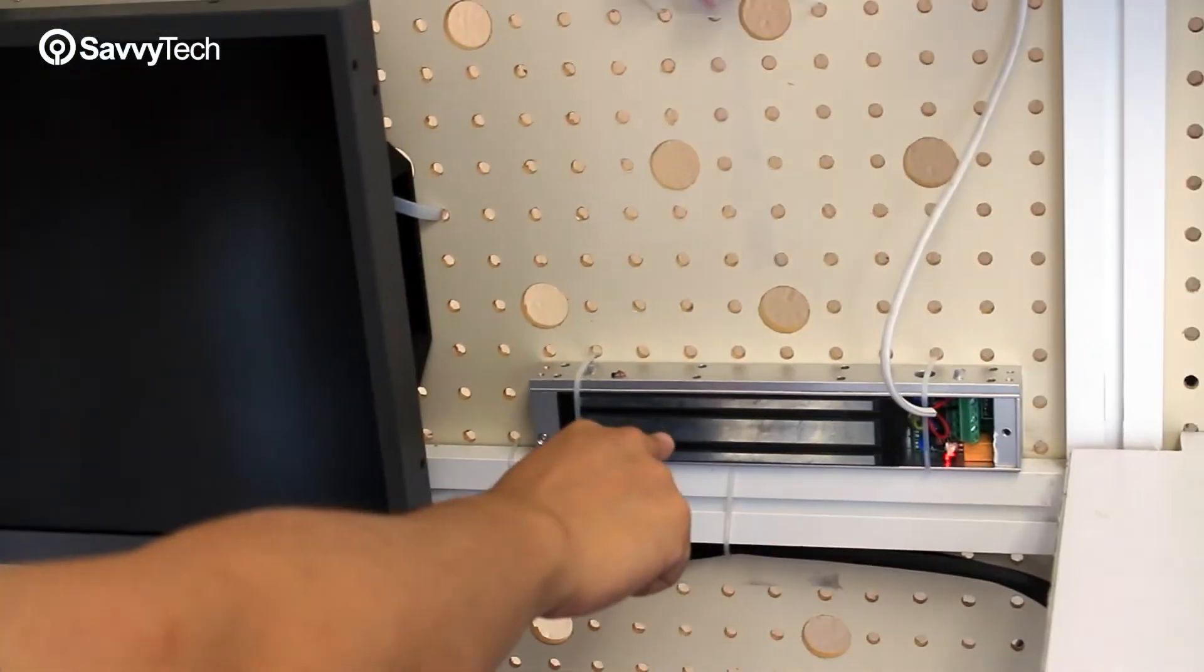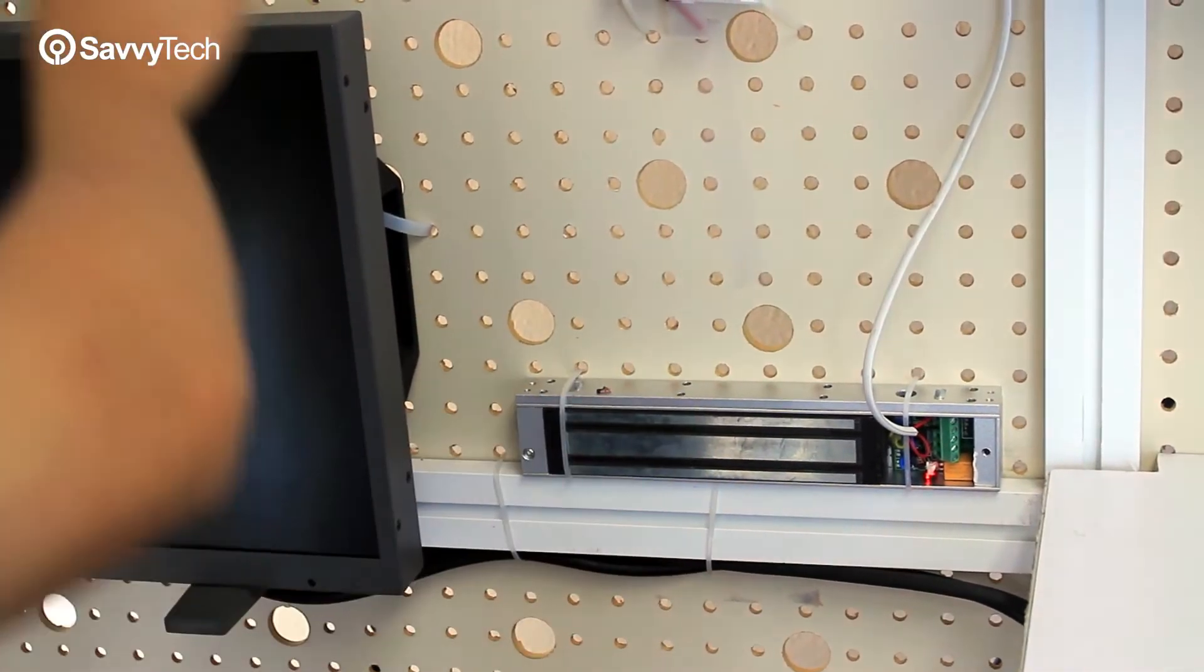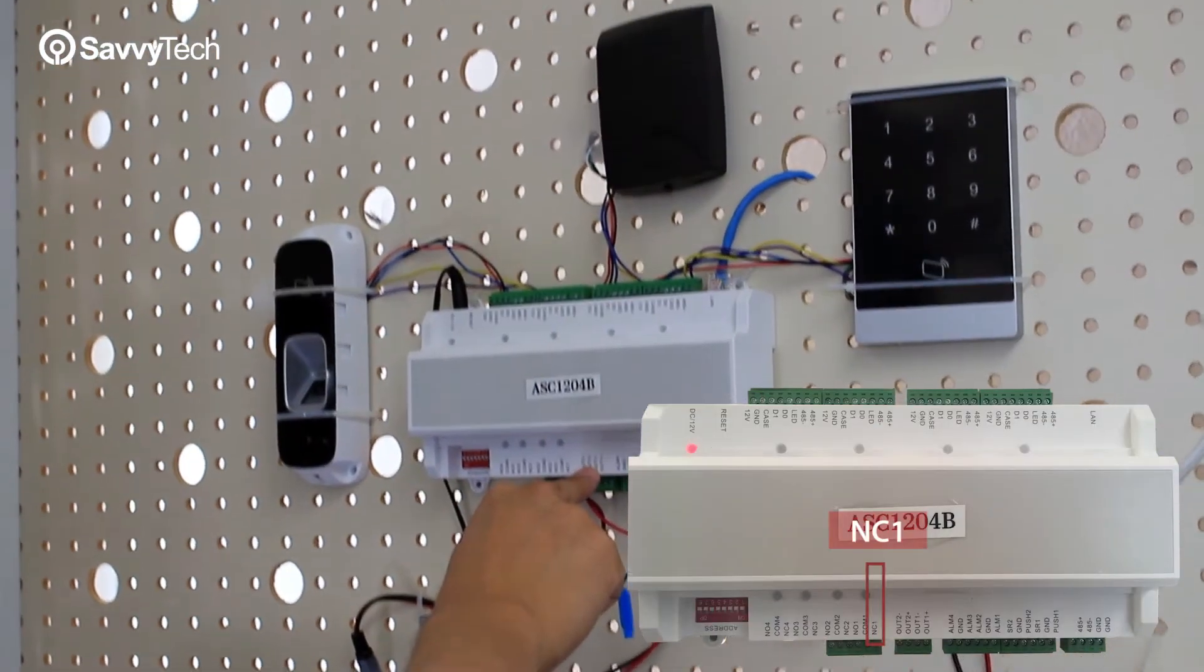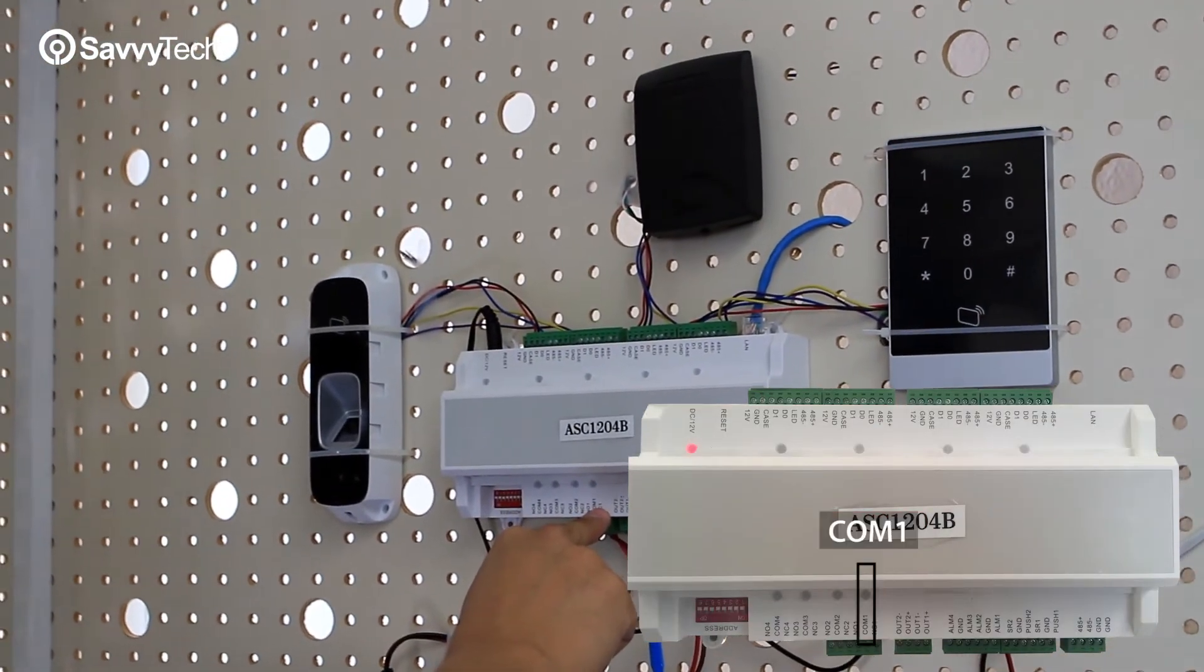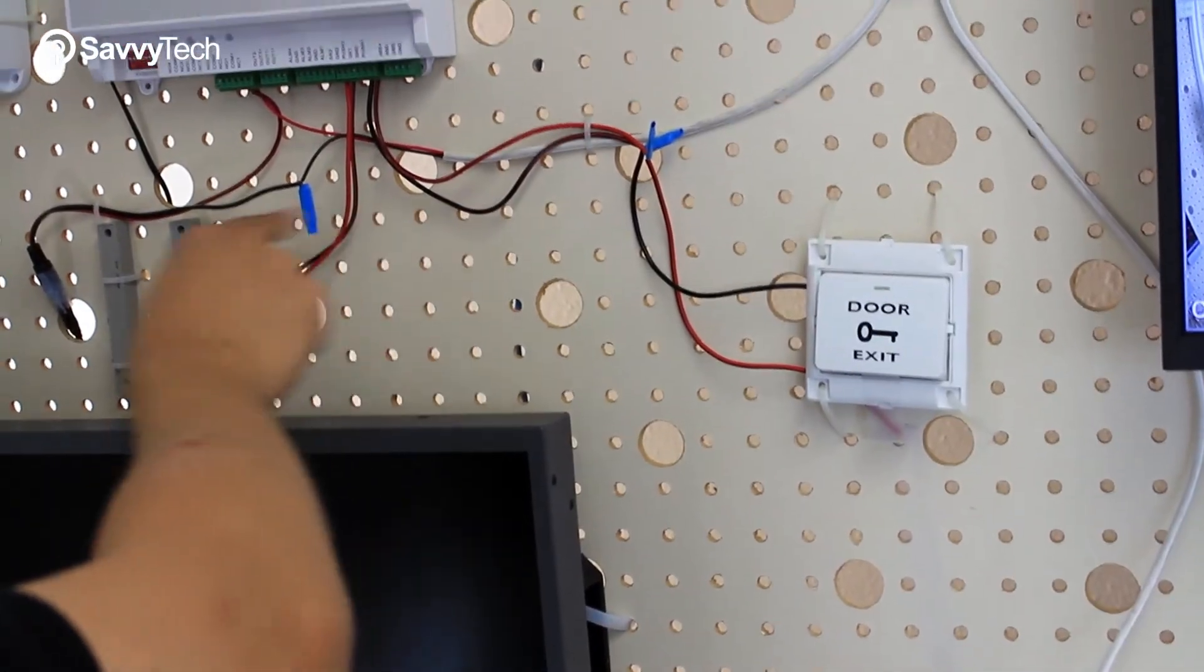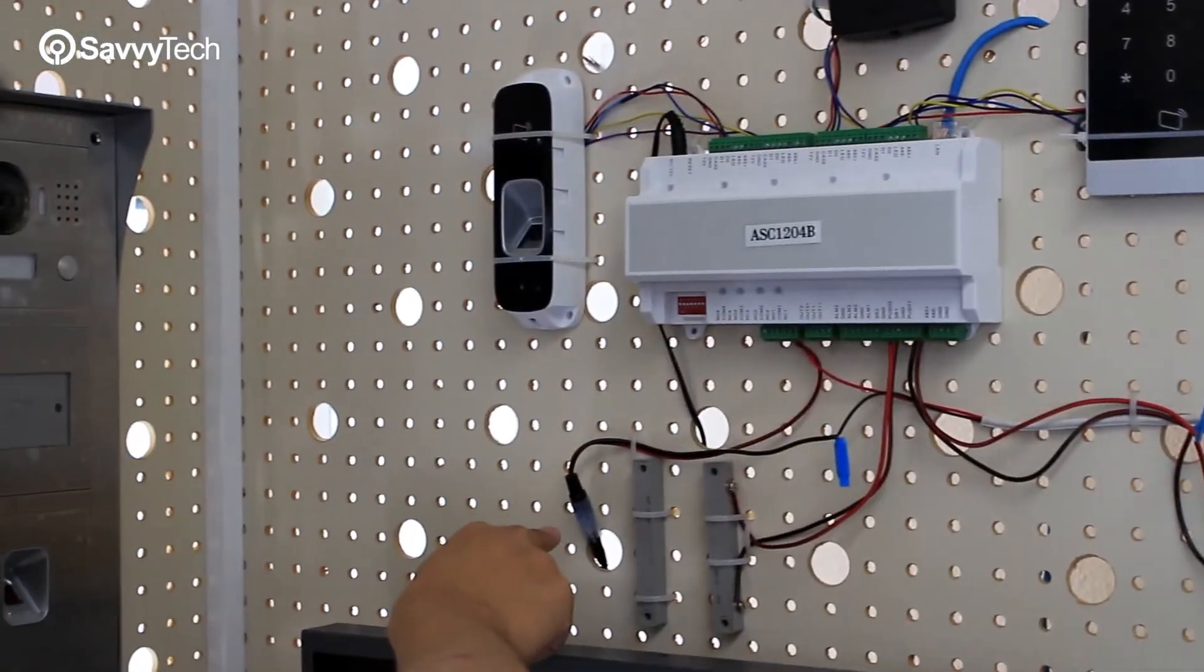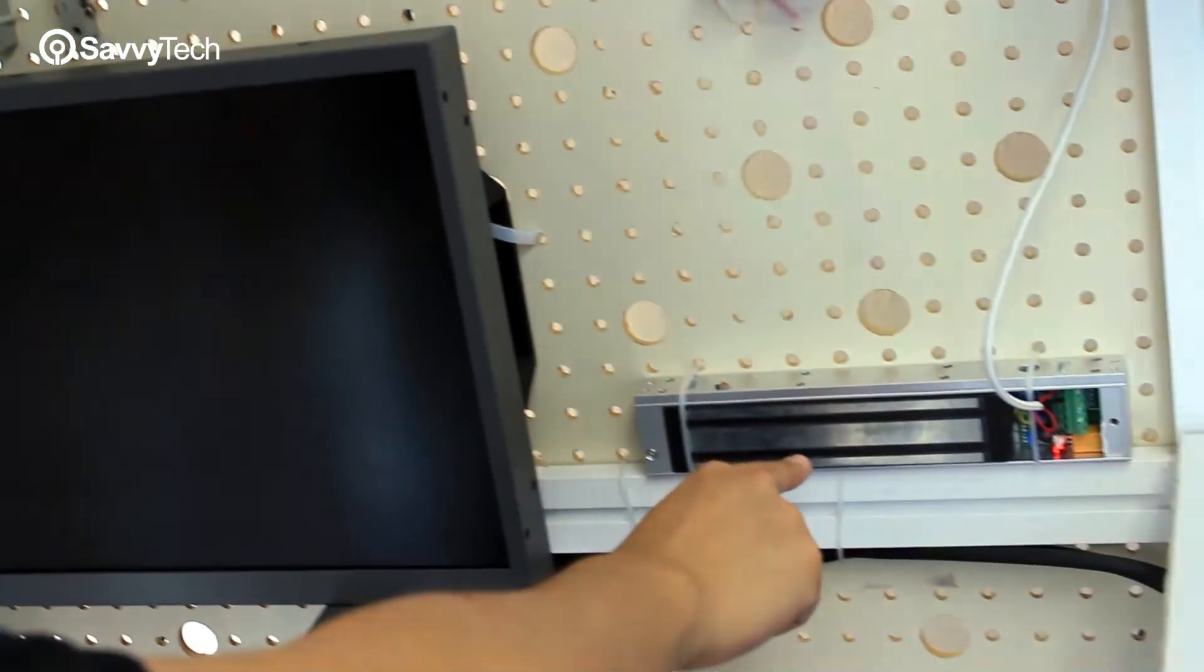The electric door lock that you see down here is actually connected to the NC1 and the COM1 port. Again, you will notice that there's a separate pair of wires also connected to a separate power supply to supply voltage to the electric door lock.